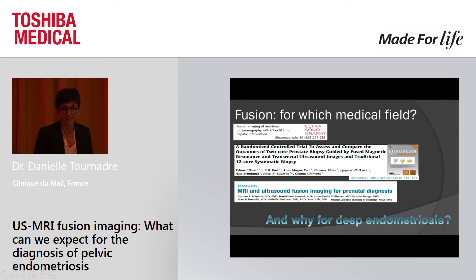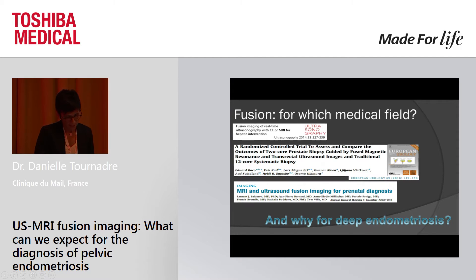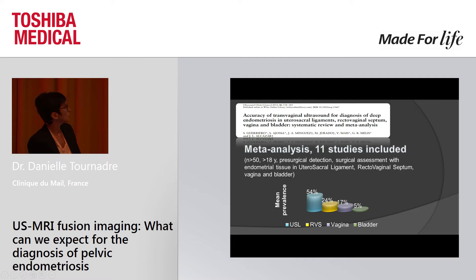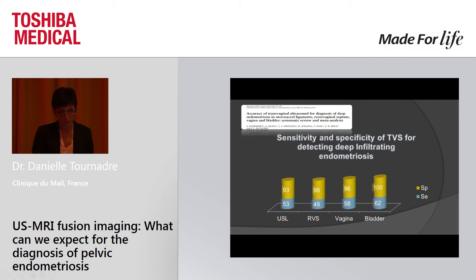Deep endometriosis is one of the hardest diagnoses for pelvic ultrasound, but it concerns up to 50% of women affected by this pathology. Many studies have demonstrated the accuracy of transvaginal ultrasound for this pathology, particularly as a first step in diagnosis. Here is a meta-analysis published in 2015 including 11 studies with pre-surgical detection and surgical assessment. The main locations of deep endometriosis are uterosacral ligament, retrovaginal septum, vagina, and bladder. Sensitivity and specificity for transvaginal ultrasound for detecting deep endometriosis are very high, though sensitivity shows lower values with large heterogeneity.